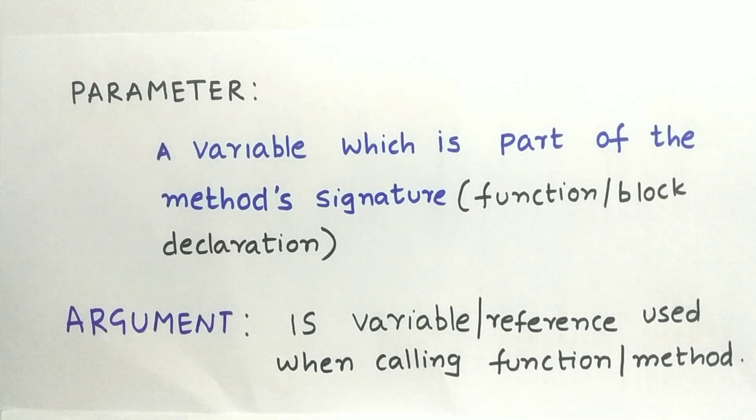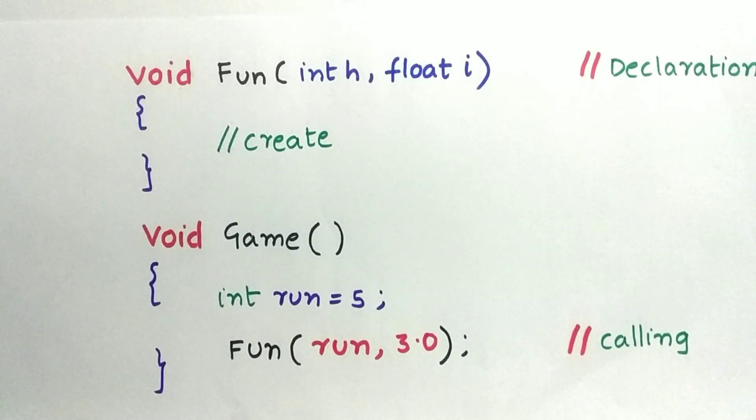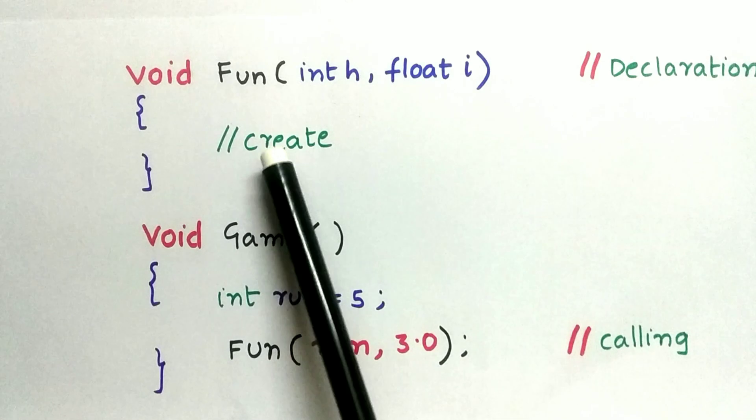So these are the definitions of parameter and argument. To understand these statements clearly, let's take an example. Now let us take an example where we have two methods, fun and game. First we need to declare the method fun. Here's the declaration.